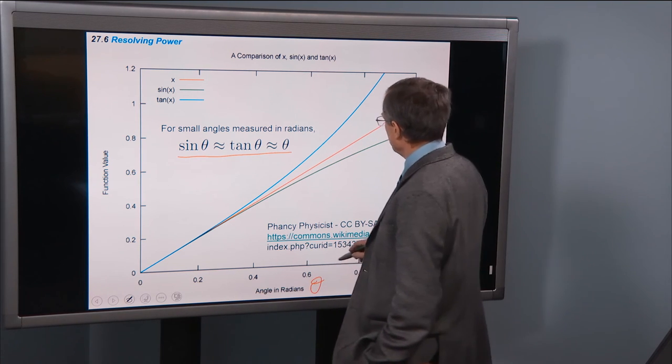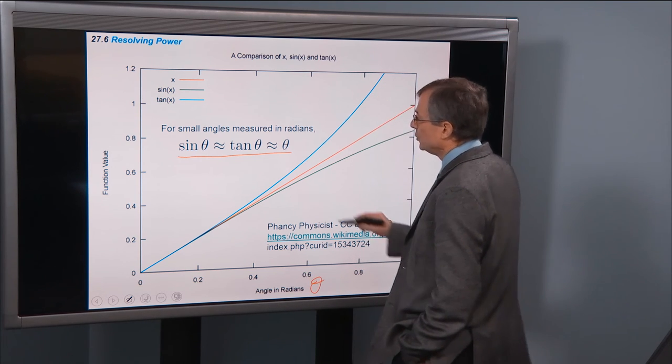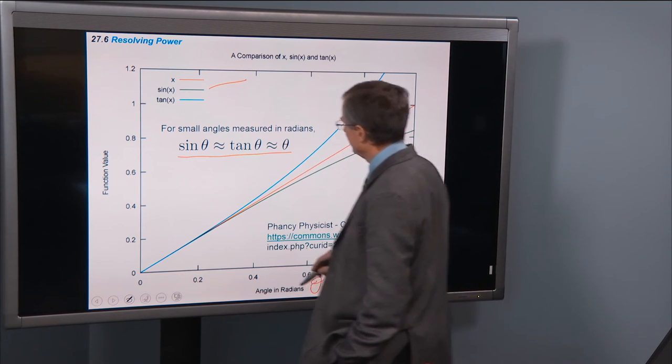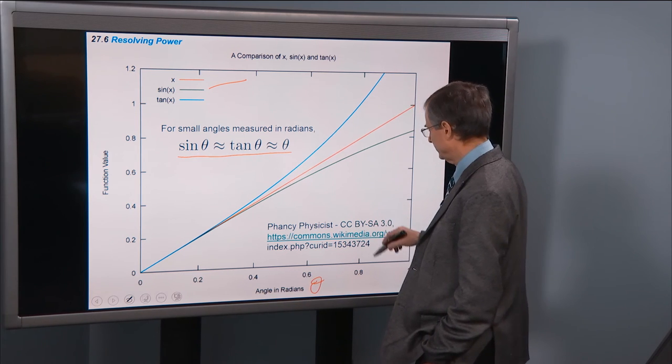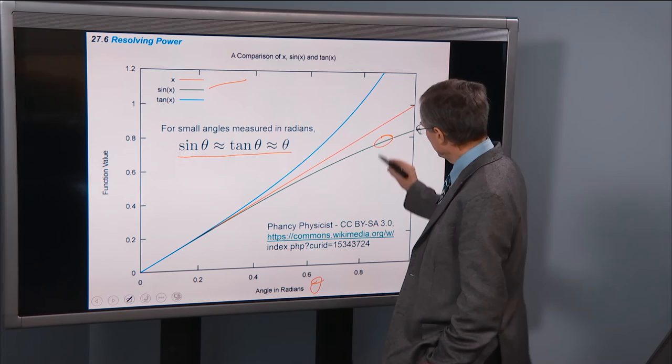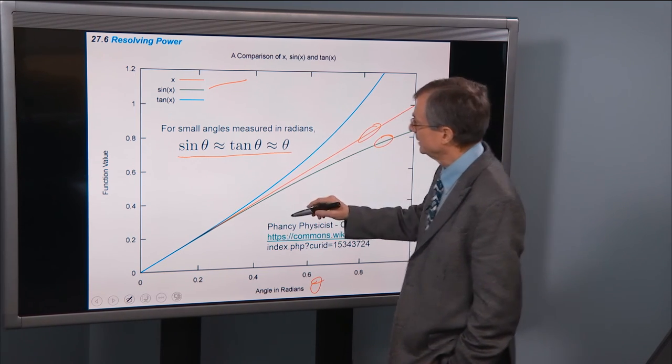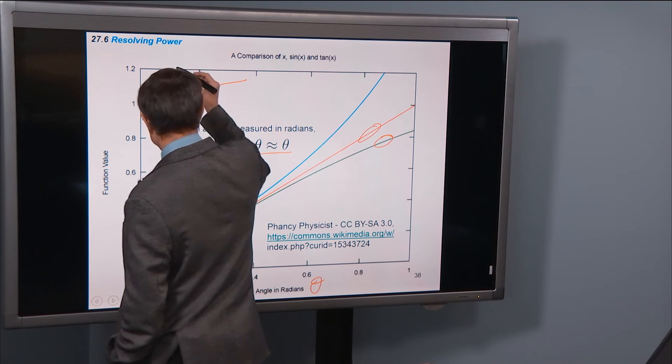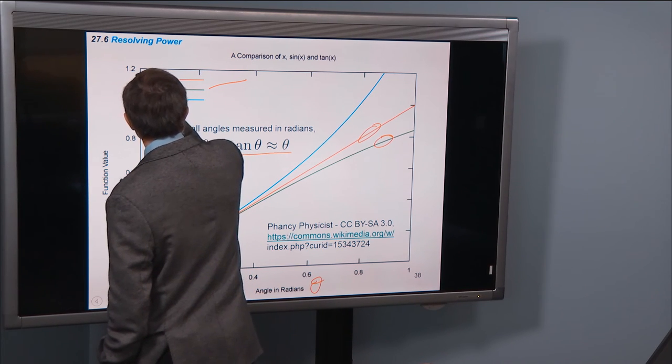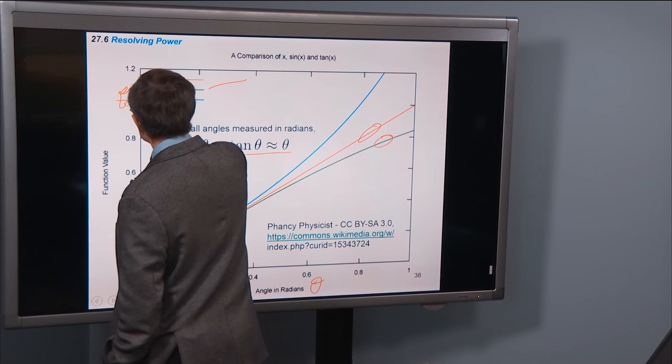So the green curve is the sine of the angle. So this one here. The red curve is just x or theta. So we can think of this as theta, sine theta, or tangent theta. I've got x versus theta here.